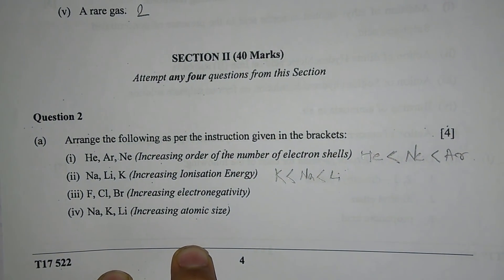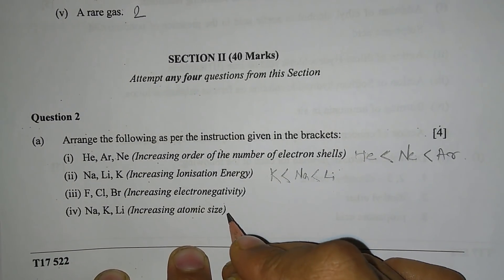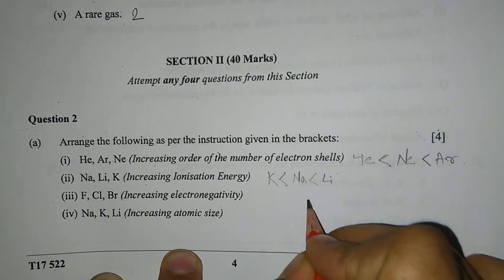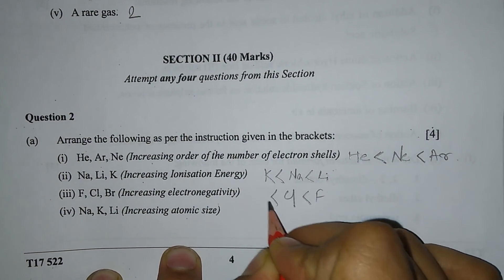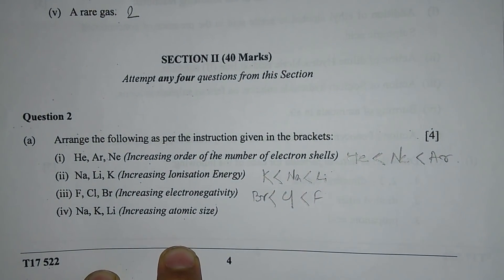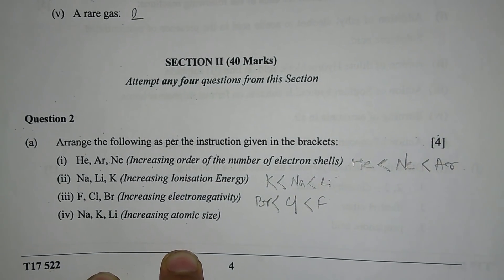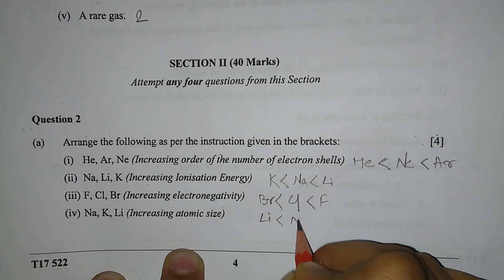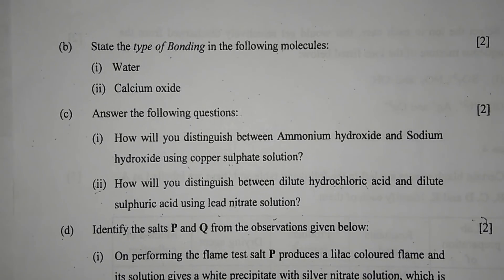Next, fluorine, chlorine, and bromine in order of increasing electronegativity. Electronegativity decreases on moving down the group, so fluorine has the maximum, chlorine after that, and bromine the least. Last — sodium, potassium, and lithium in increasing atomic size. Atomic size increases while moving down the group, so in order: lithium, sodium, and potassium.